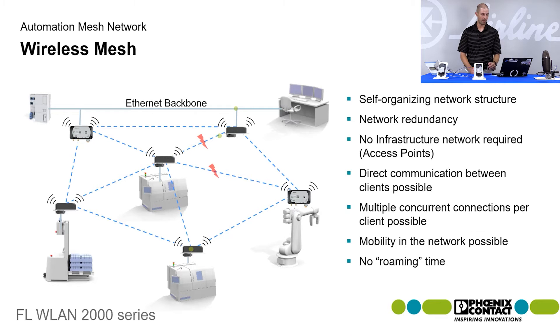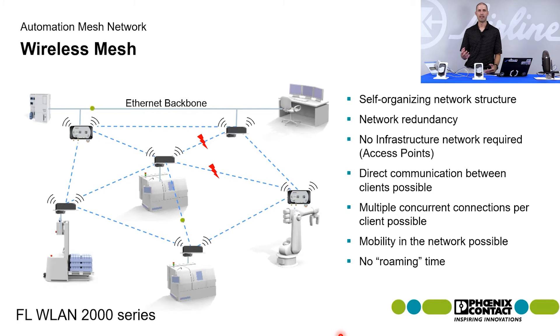If a route were to break, those nodes now know who their neighbor is and where another alternate path is available, so that data can be diverted to another good path.